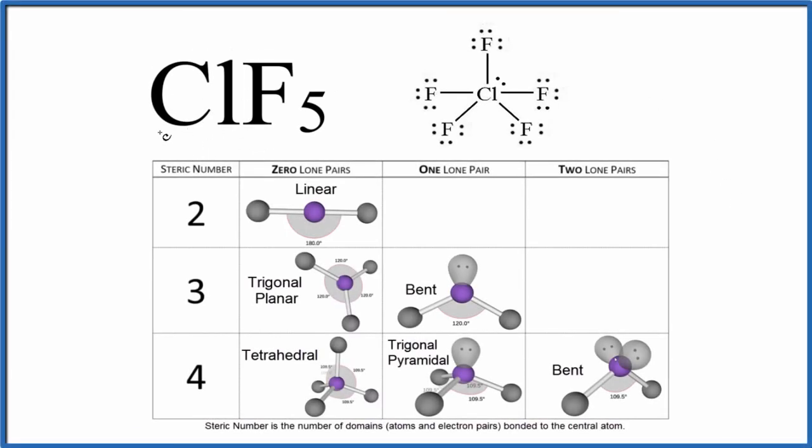Let's take a look at the molecular geometry for ClF5. This is chlorine pentafluoride. So we'll start with a valid Lewis structure. This is the Lewis structure for ClF5. If you need help with this, there's a link at the end of the video.